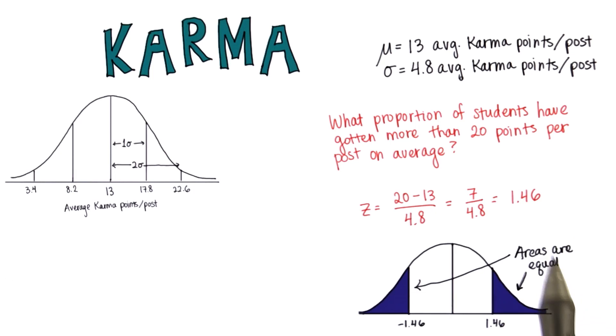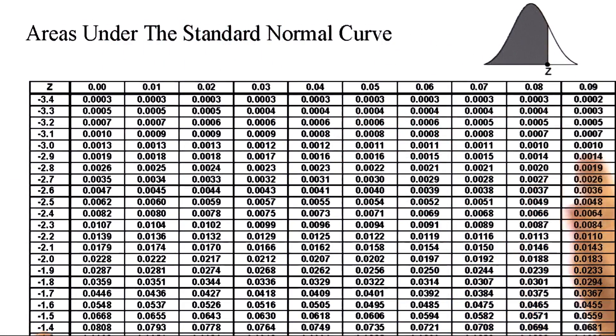That means we don't necessarily have to calculate the proportion less than 1.46 and then subtract it from 1. We could just find the proportion less than negative 1.46. And we find that the proportion less than negative 1.46 is the same thing we calculated before, 0.0721.